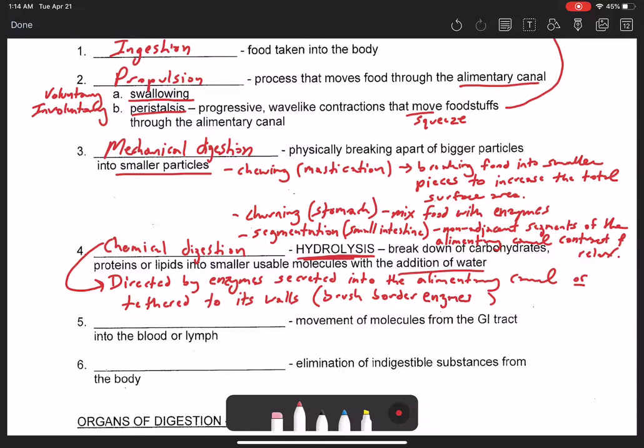And then another process we want to go over is absorption. So once we go through all these processes of digestion, we want to actually absorb those nutrients that we have yielded. So this is just the movement of molecules in the GI tract to the blood or lymph. And this occurs through the mucosal cells. These are the cells that are actually lining the GI tract, most of which are classified histologically as simple columnar epithelium. We're going to be moving the food ultimately through the mucosal cells.